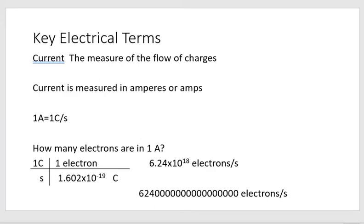Even though electrons are going by and electrons have a negative charge, we're never going to list it as negative amps. In your home, if there's a 10-amp fuse and it blew, it wasn't positive charges flowing through — it was electrons. And even though they're negatively charged, we still call it a positive flow because electrons are the only things that flow.